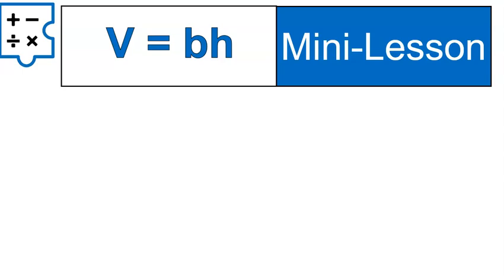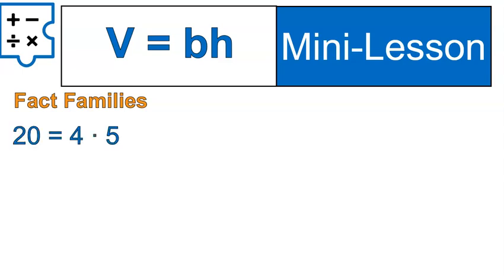Now let's look at the volume as base times height. This formula we're actually going to break down into what we call fact families. Before I do that with this formula, I want to do fact families with a multiplication equation you might remember: 20 is 4 times 5. That's pretty straightforward. 4 is equal to 20 divided by 5, and 5 is equal to 20 divided by 4. That's a fact family of equations, all using those same three numbers.